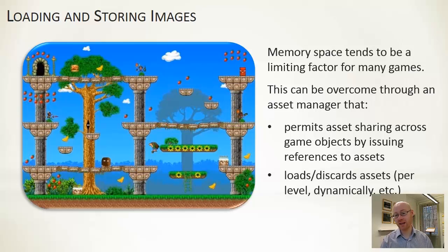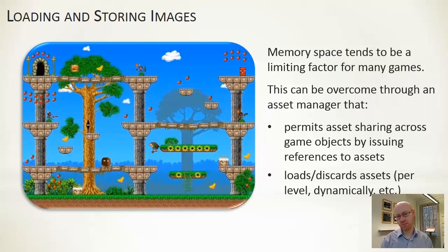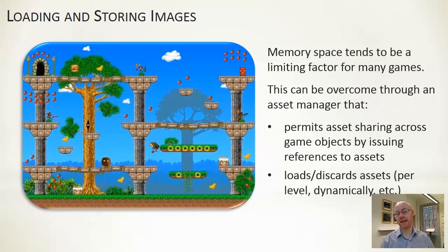The asset manager goes beyond the basic asset loader available in Android — it's a special class responsible for loading in and holding on to those assets. Our game objects can then request a reference to it, so they don't get their own copy. There's only one physical copy stored in memory, but the asset manager can hand out as many references as it wants to that particular asset, enabling our game objects to make use of it. More sophisticated asset managers may load things dynamically, load by level, and discard things as we run low on memory.